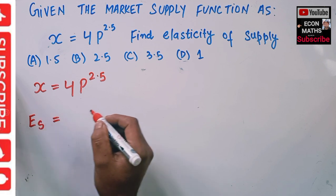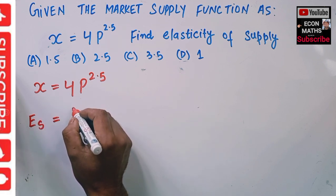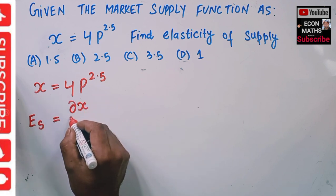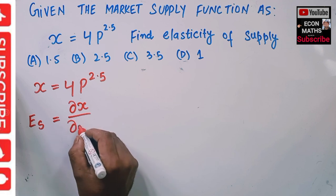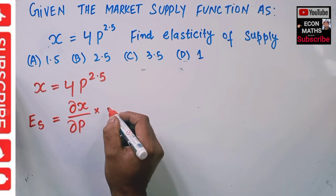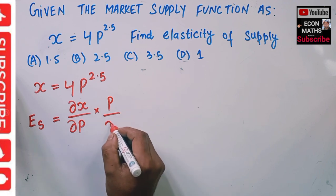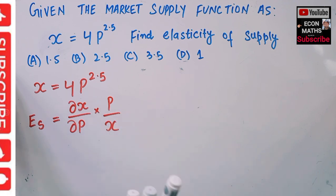The formula is dX/dP times P/X, where X is quantity supplied. So for this, what we need to do first is find out this derivative dX/dP.